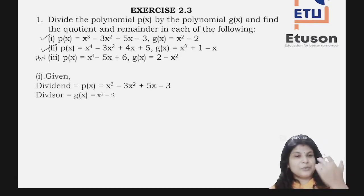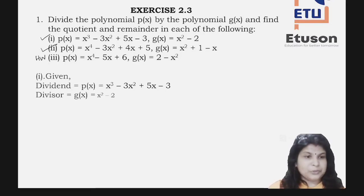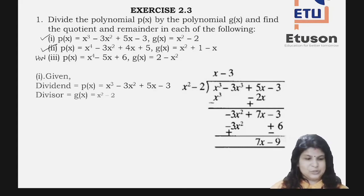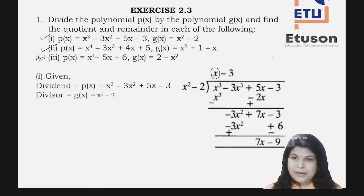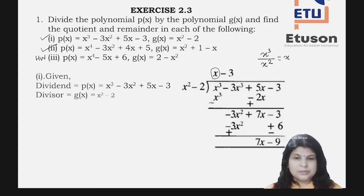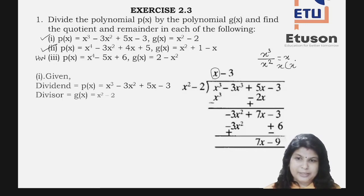In this case, x³ divided by x² gives x. So x is your first quotient term. Now you multiply x with the divisor x² - 2, giving x³ - 2x. This x³ - 2x has to be subtracted from the dividend — subtraction happens with like terms. So x³ is written under x³ and -2x is written below 5x.